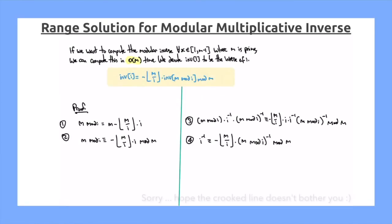To compute the modular inverse for a range of numbers in linear time, we can actually just simply use this direct formula. The way this works is we first denote inverse of i to be the inverse of i. We also assume that the number that we're doing modular by m is a prime number.